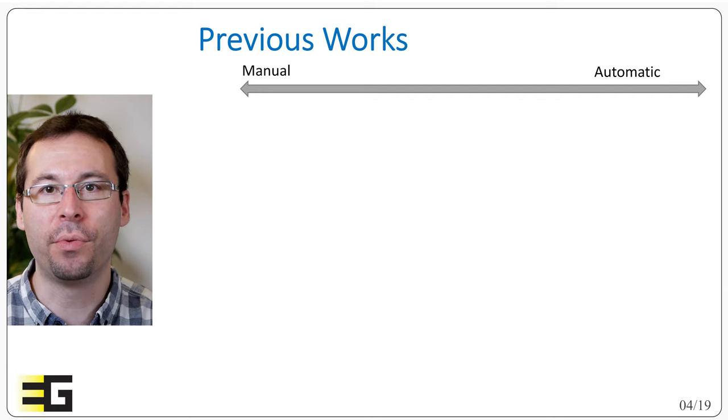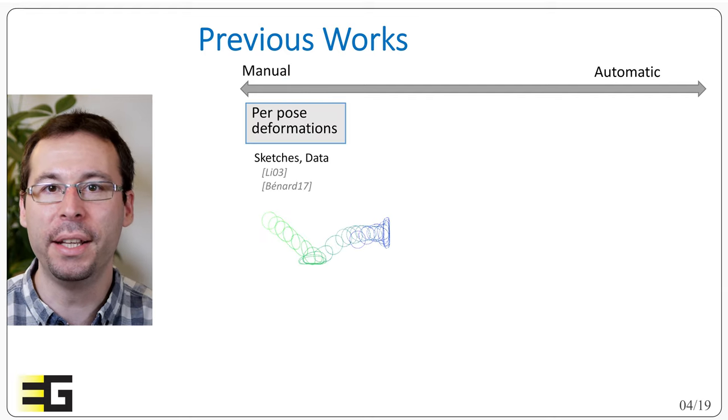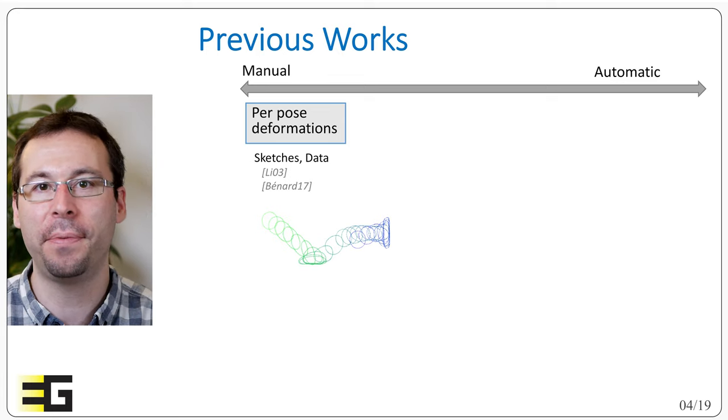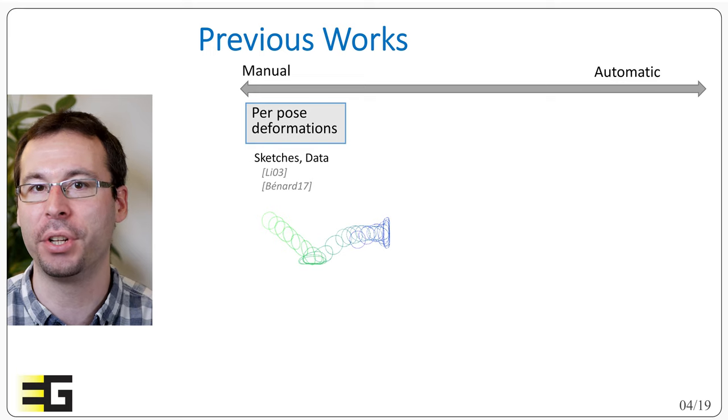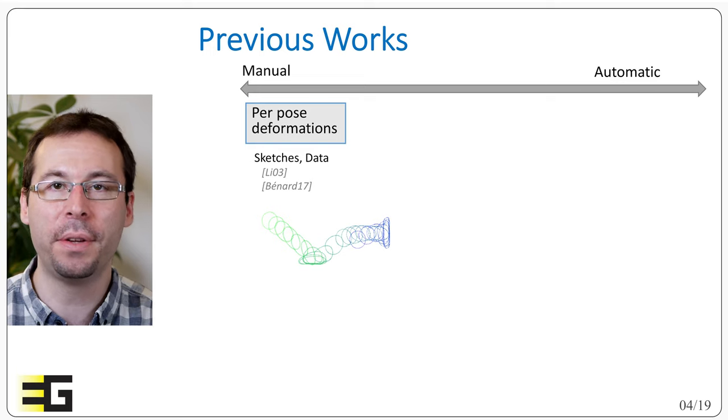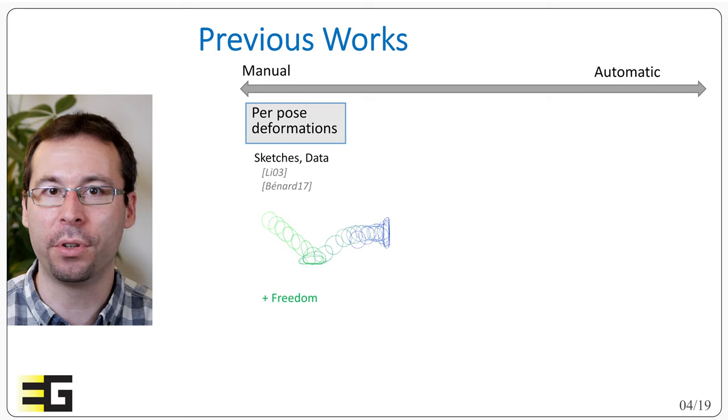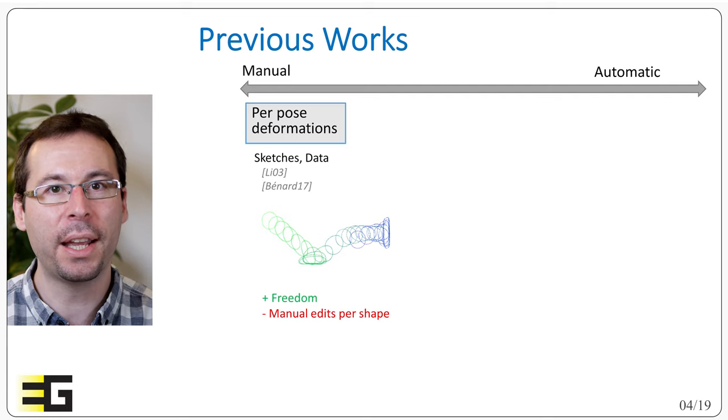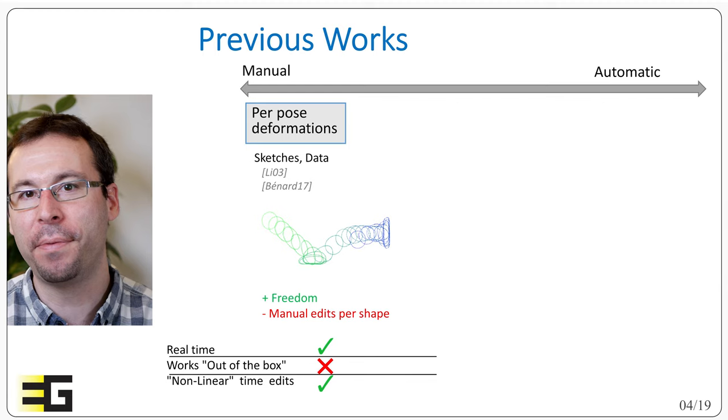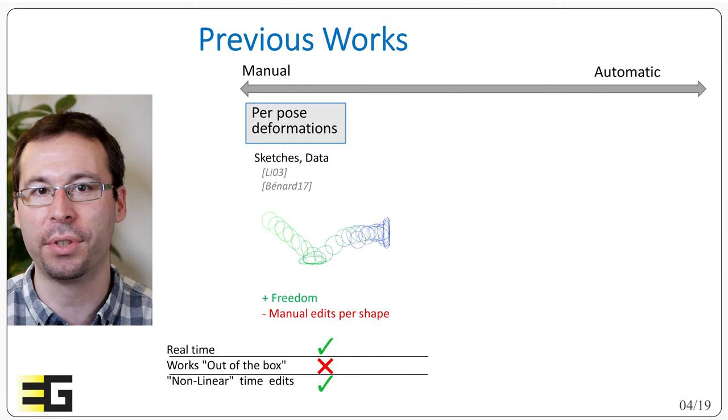If we look at the previous works, we have on one side the manual approaches. Lee or Benard and colleagues, for instance, propose a way for the artist to carefully sculpt and sketch the shape that the deformed object should take during the motion and actions. This deformation can be learned and adapted to different situations. This approach allows a very fine level of control and can often be applied in real-time, but they require manual design for each individual shape. They therefore cannot be applied out of the box on pre-existing skin shapes with various skeletal structures.